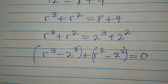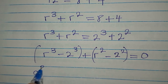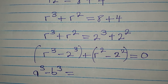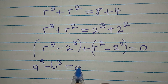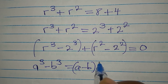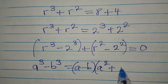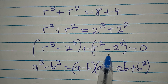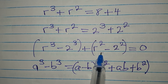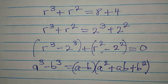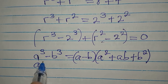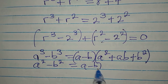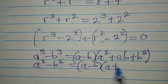We're going to deal with the difference of two cubes. If you have a to the power of 3 minus b to the power of 3, this equals a minus b into a squared plus ab plus b squared. Then we have the difference of two squares, where a squared minus b squared equals a minus b into a plus b.